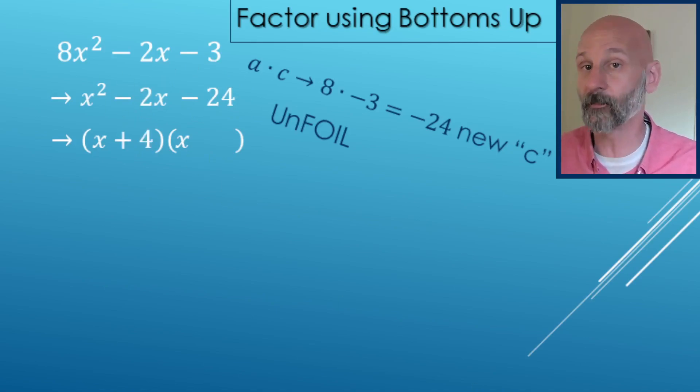So that's going to be a plus four and a minus six. Four times negative six makes negative 24. Four minus six makes negative two.